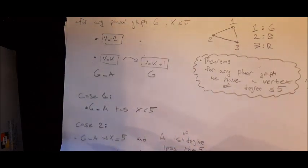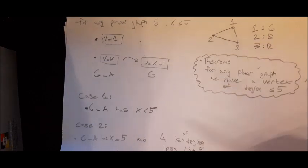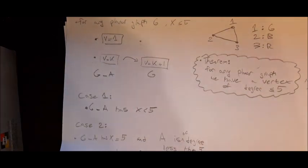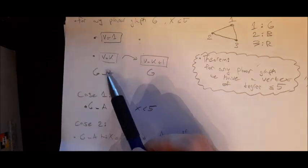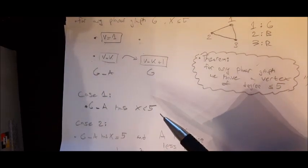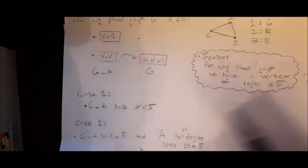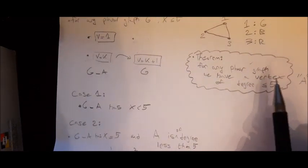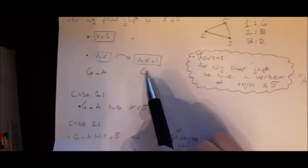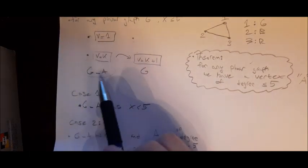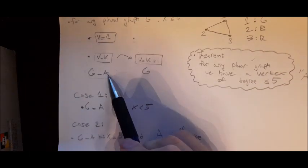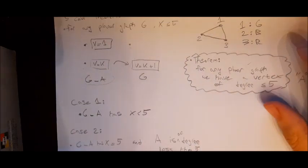For the inductive step, we assume that for any planar graph with k vertices the theorem holds, and we want to prove it for k+1 vertices. We call our graph G, and our reduced graph G minus A, where we remove vertex A from G. Since G minus A has k vertices, the inductive hypothesis applies to it.